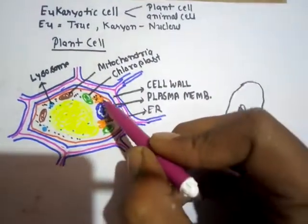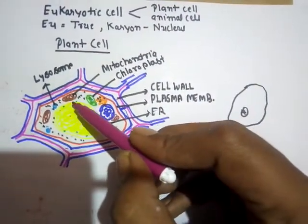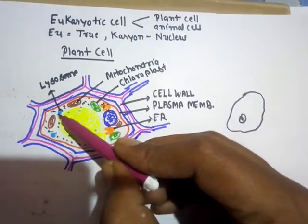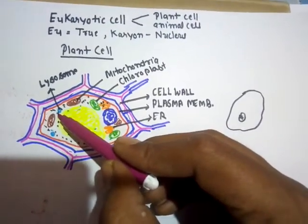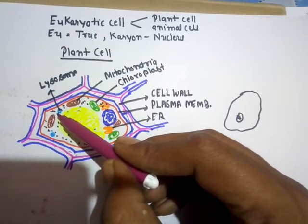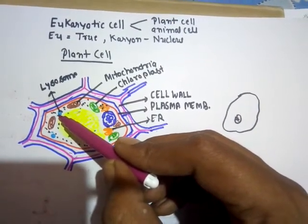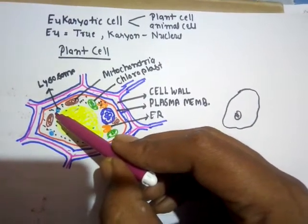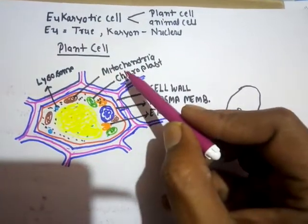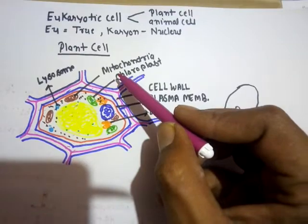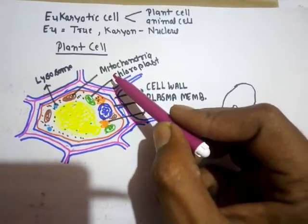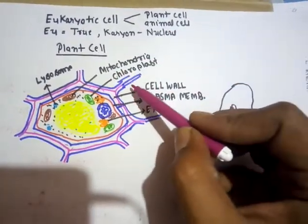As a eukaryotic cell, the plant cell also has other membrane-bound organelles, like mitochondria. Their number can vary depending upon the physiological activity of the cell — more physiologically active cells have more mitochondria. They are the powerhouse of the cell because they are responsible for the production of ATP, adenosine triphosphate.